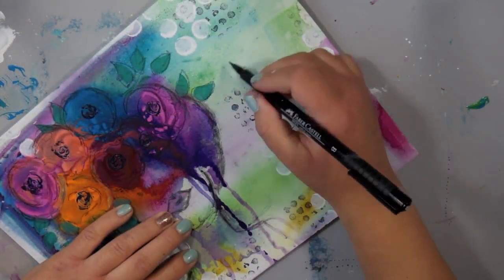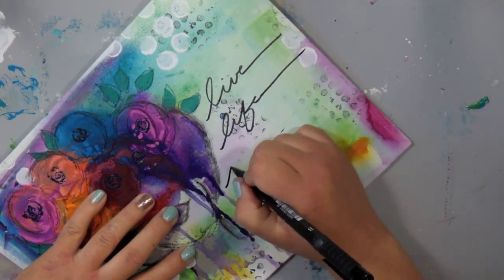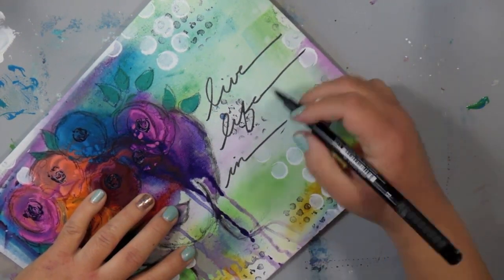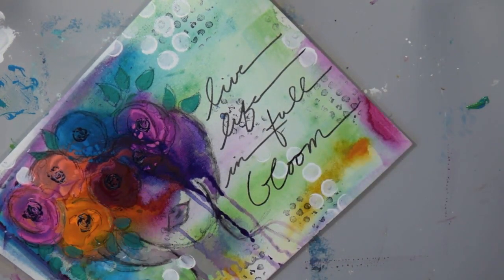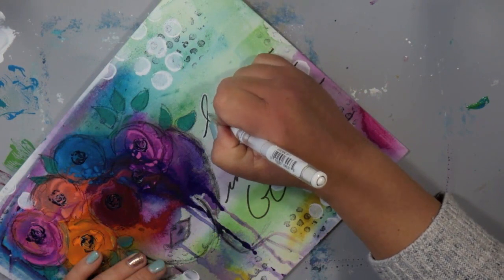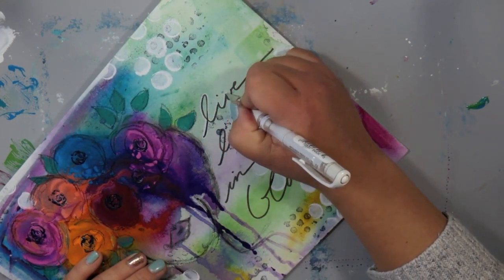So now I'm getting ready to finish my piece by adding a quote and I'm just using a brush tip pen and kind of scribbling on this quote and then I'm going to take a white gel pen and outline that.